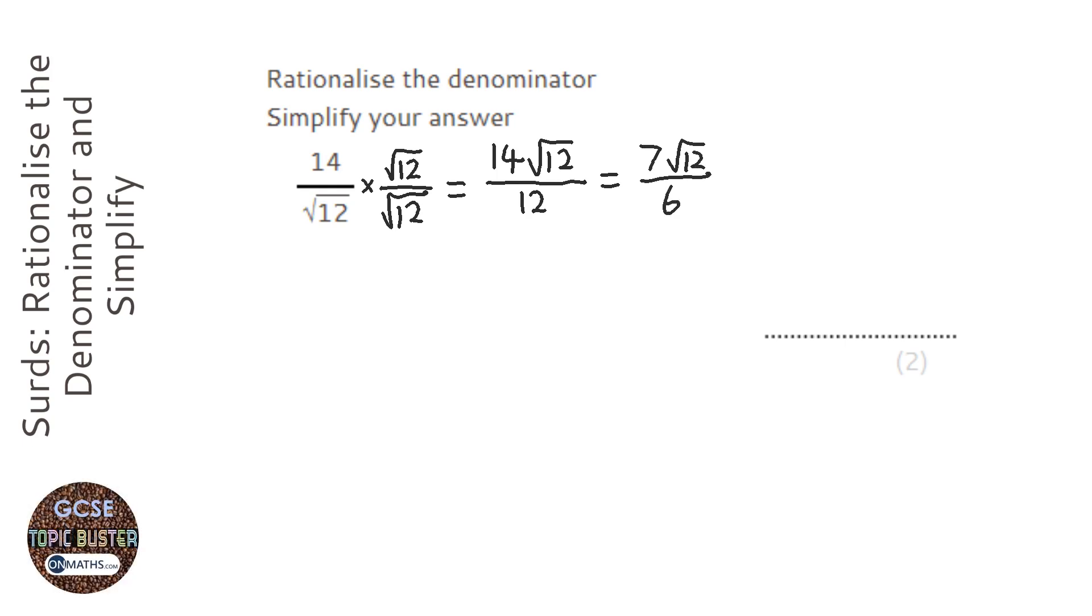But you'll also notice that √12 can simplify as well, because √12 is √4 times √3, which is 2√3 since √4 is 2.